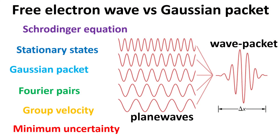We shall solve the Schrödinger equation for one of the most classic problems in quantum mechanics, that of a free electron. As illustrated here, one can imagine the electron as an extended plane wave, or a more localized wave packet. In this video, we will learn how to construct these solutions to the Schrödinger equation, and discuss their rather subtle quantum mechanical properties.